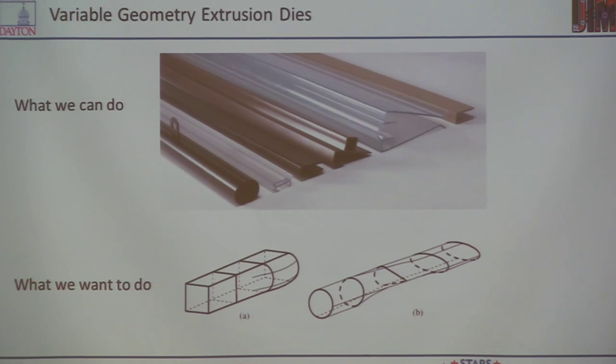The problem we have with extrusion is if you look at these parts, they're fixed cross section, no matter where you cut it, it looks exactly the same. So the capacity to do things like this actively as you're pushing the hot plastic through the die doesn't really exist.